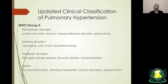Group 5 includes hematologic disorders such as chronic hemolytic anemia, myeloproliferative disorders, and splenectomy; systemic disorders such as sarcoidosis, lymphangioleiomyomatosis, pulmonary Langerhans cell histiocytosis, and neurofibromatosis; metabolic disorders such as glycogen storage disease, Gaucher disease, and thyroid disorders; and others such as tumor obstruction, fibrosing mediastinitis, and chronic renal failure.